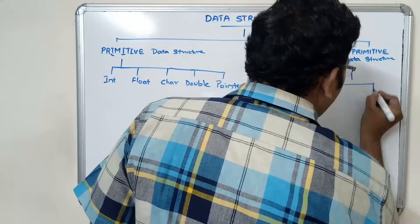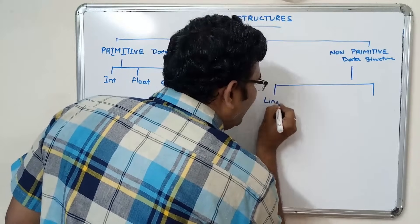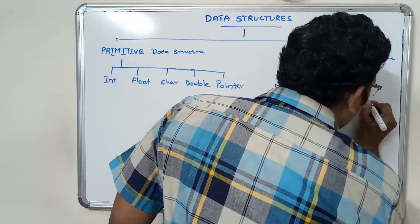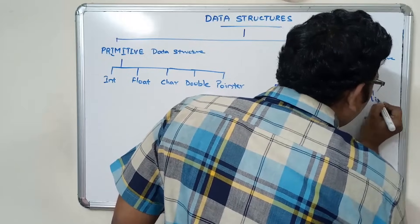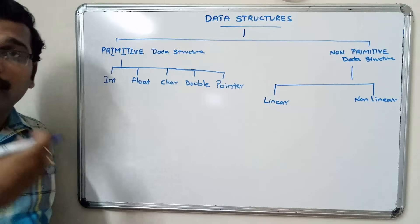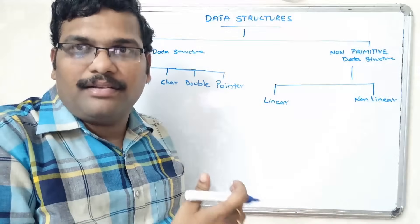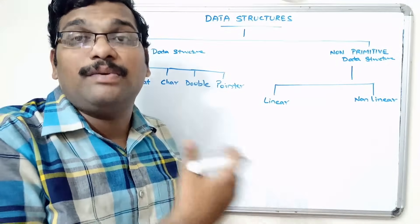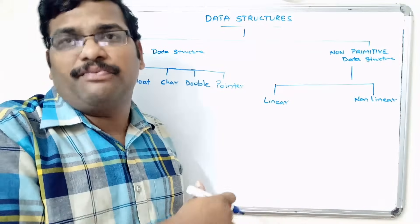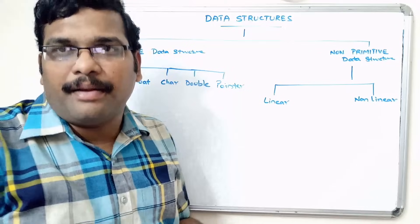Next, coming to non-primitive data structures — it is again divided into two types: linear data structures and nonlinear data structures. Linear means sequential, and nonlinear means not sequential — we can call it random. In linear structures all data is arranged in sequential manner; in nonlinear, data is arranged in random manner.